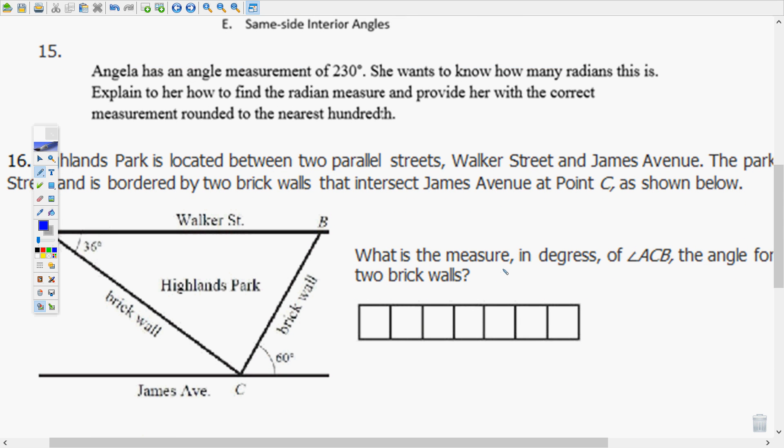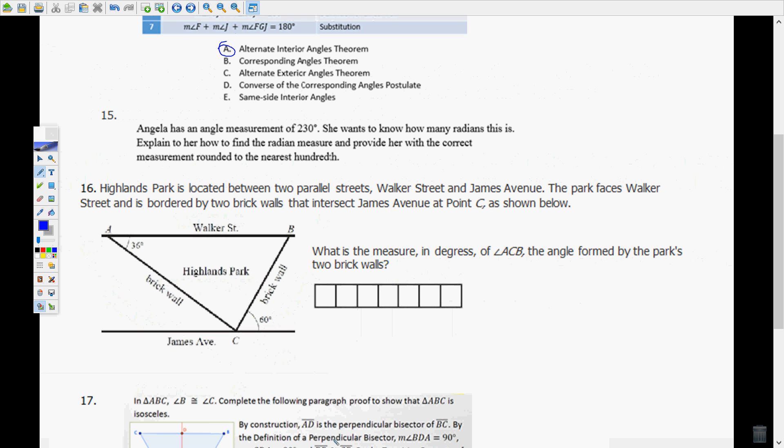Angela has an angle measure of 230 degrees. She wants to know how many radians this is. Explain to her how to find the radians measure and provide her with the correct measurement rounded to the nearest hundredth. So first you need to remember the degrees to radians and radians to degrees formula.